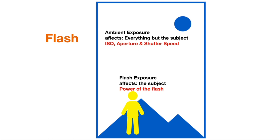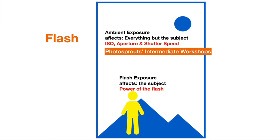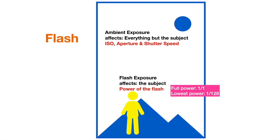To learn how to shoot proficiently in your camera's manual mode, please sign up for the Photosprout intermediate workshops. The flash exposure is controlled by the power of the flash. Full power is 1/1 and will give you the strongest light. For most flashes, the lowest power is 1/128. The flash exposure is also controlled by other factors such as aperture and distance, but I won't cover that in this tutorial. You can sign up for our in-person portrait lighting and posing workshops to learn more.